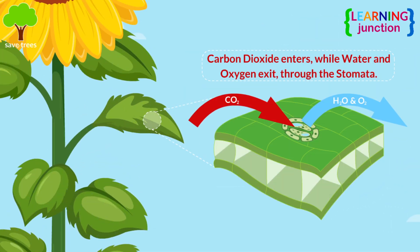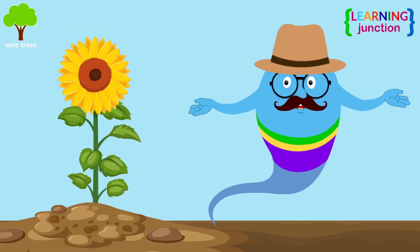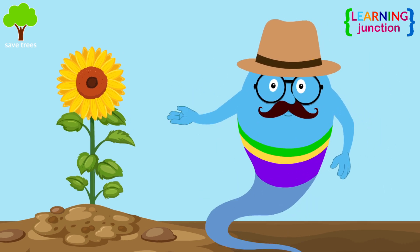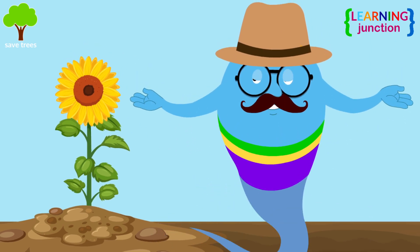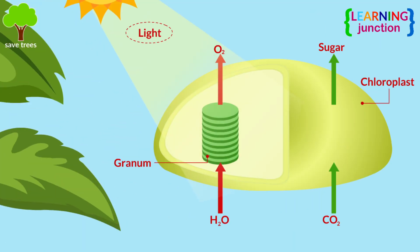Plants open their microscopic stomata on the leaf surface to absorb carbon dioxide from the air. It provides the essential carbon atoms that plants use to build glucose sugar, which is their primary food source and energy. Within the leaf cells, light energy, water, and CO2 are combined through chemical reactions, fueled by chlorophyll.